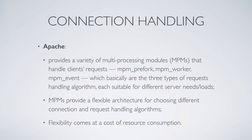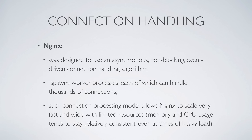Apache provides a variety of multi-processing modules (MPMs) — prefork, worker, and event. These three modules are basically the three types of request handling algorithms, each suitable for different server needs or load scenarios. MPMs provide a flexible architecture for choosing different connection and request handling algorithms, but this flexibility comes at a cost of resource consumption. Under some working conditions, Apache can eat your server for breakfast.